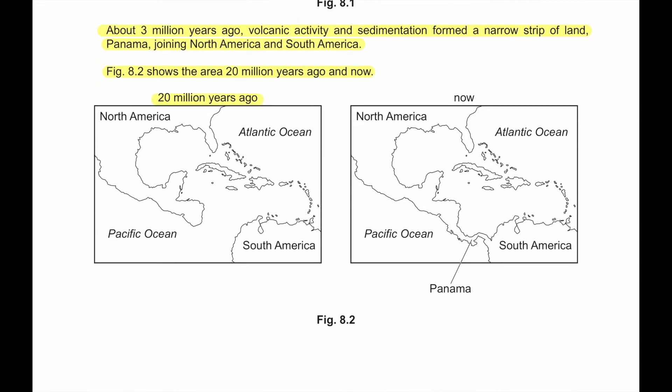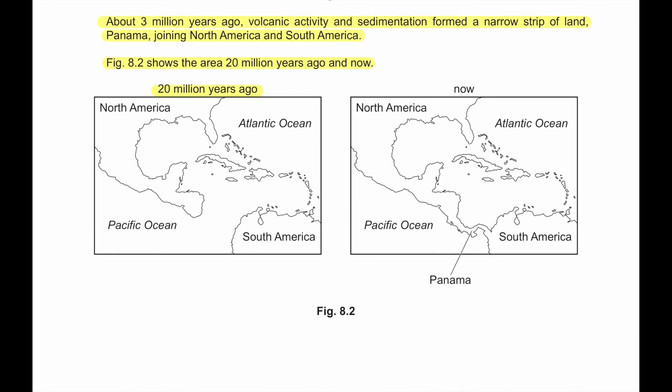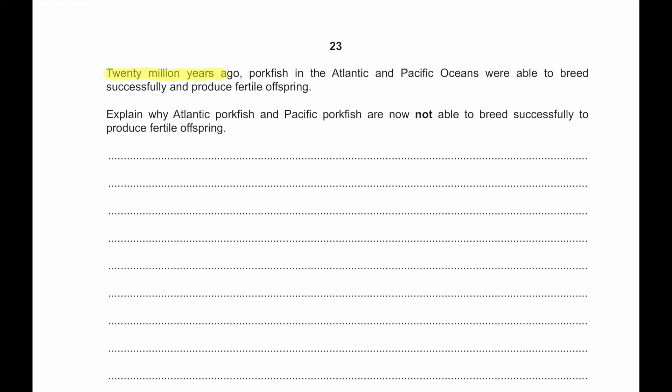About 3 million years ago, volcanic activity and sedimentation formed a narrow strip of land, Panama, joining North America and South America. Figure 8.2 shows the area 20 million years ago and now. 20 million years ago the regions were separated. Now there is a region called Panama. 20 million years ago, porkfish in the Atlantic and Pacific Ocean were able to breed successfully and produce fertile offspring. Explain why Atlantic porkfish and Pacific porkfish are not able to breed successfully to produce fertile offspring.